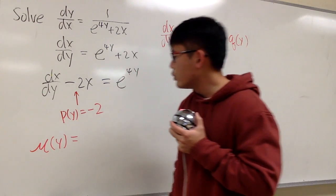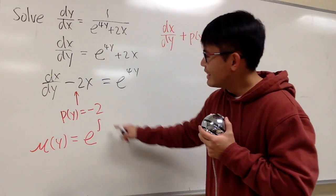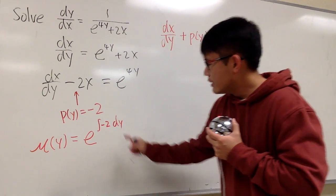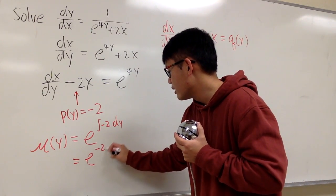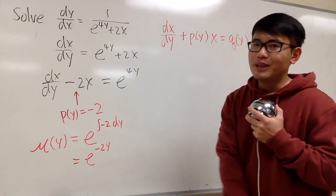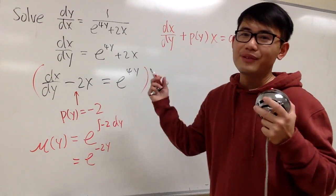it will be μ(y), and this is equal to e as the base, and we take the integral, and the power is the integral, right? And we'll put this right here, negative 2 dy. So this is going to be e^(-2y). And you don't need to worry about the plus c, right? Just this is enough. You can watch my other video for further explanation, but right here, let me just work this out for you guys.